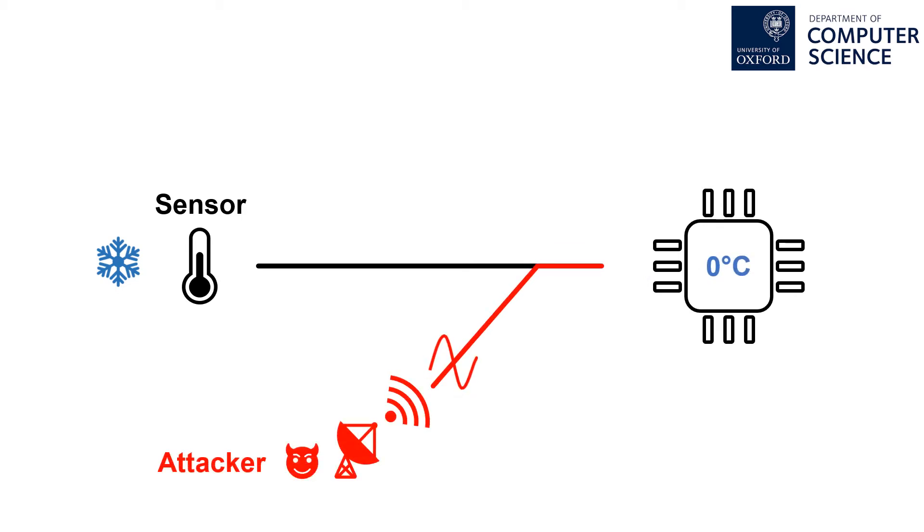An attacker can manipulate the sensor output by intentionally inducing electromagnetic interference in the wire between the sensor and the microcontroller. The microcontroller cannot determine whether the measurement is from the sensor or the attacker.